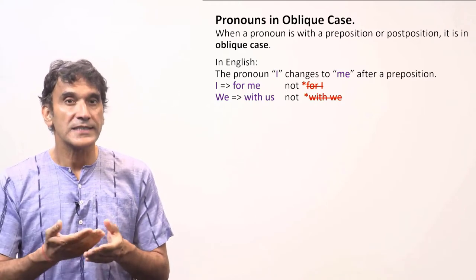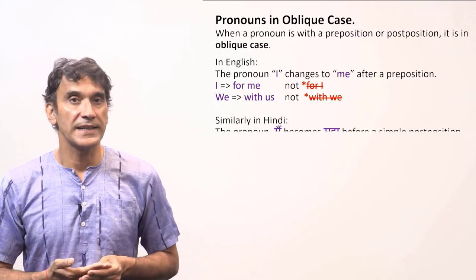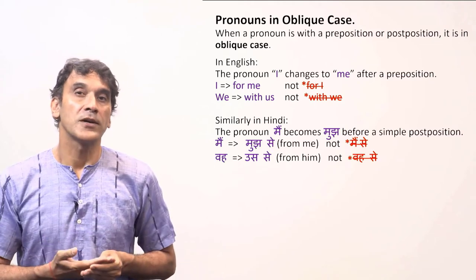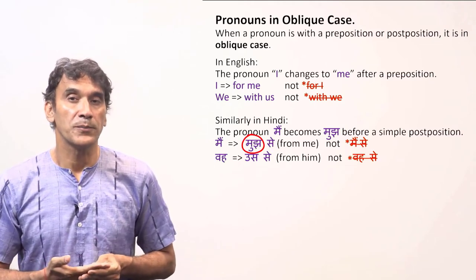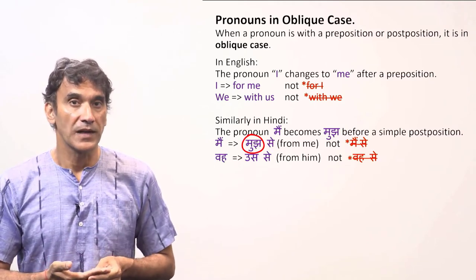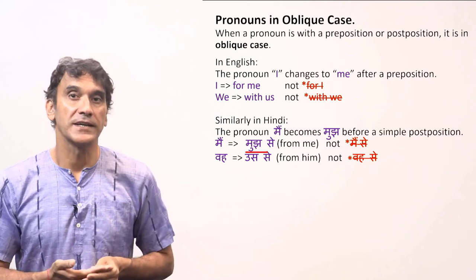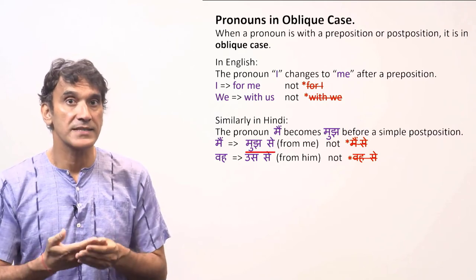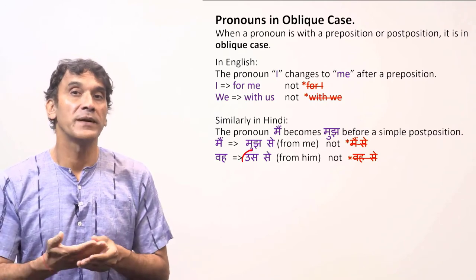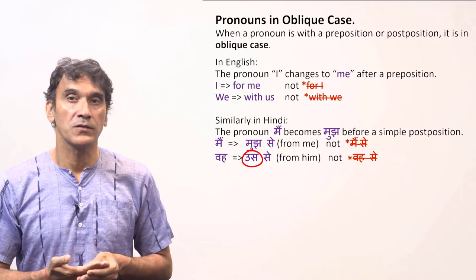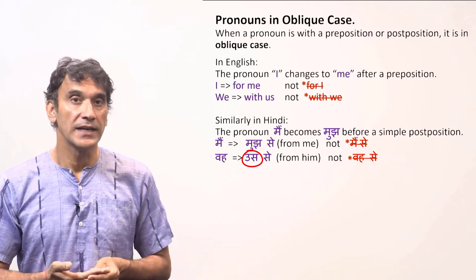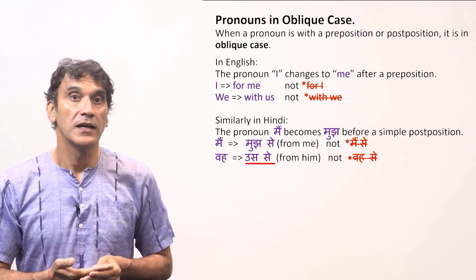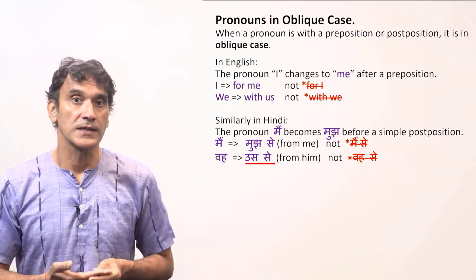The same thing happens in Hindi. The pronoun 'मैं' becomes 'मुझ' before a postposition — 'मुझ से' means 'from me'; it's never 'मैं से'. Similarly, 'वो' becomes 'उस' with a postposition — it is 'उस से', not 'वो से'.